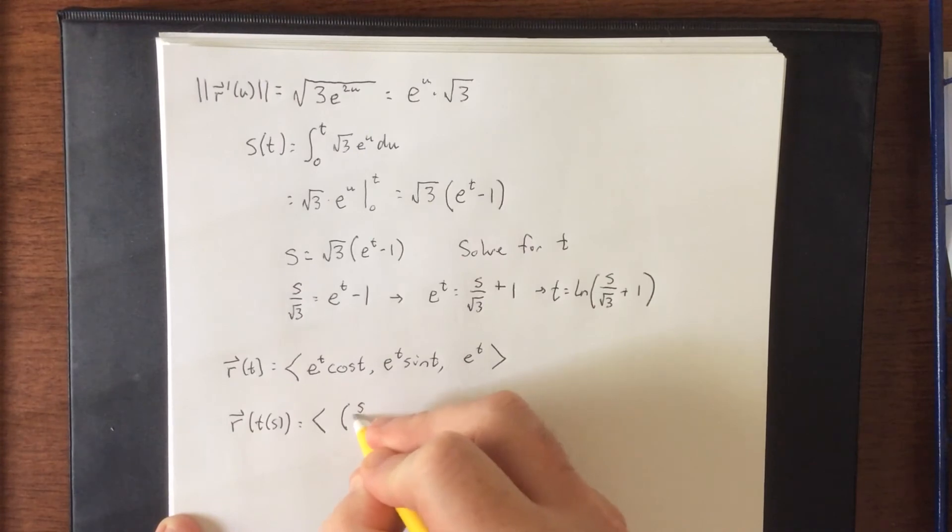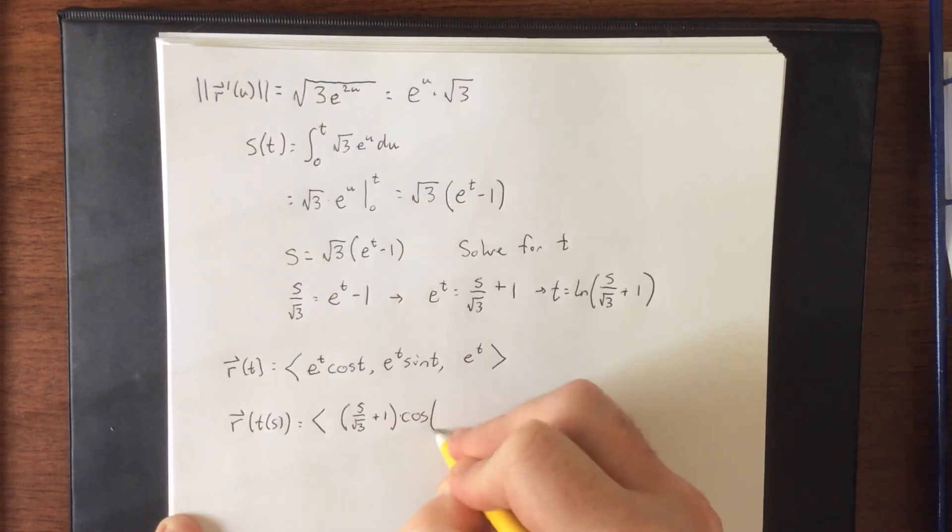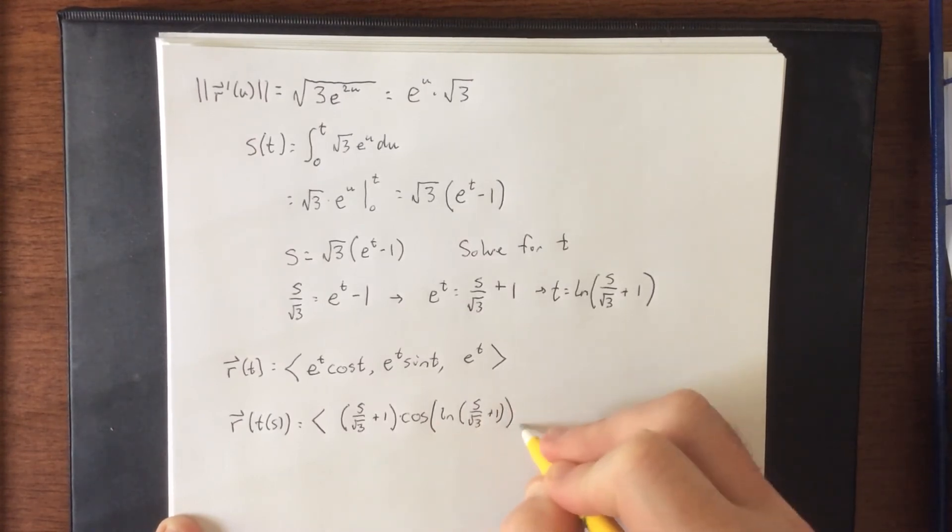So we have e to the t, which is s over the square root of three plus one times the cosine of t, and that will be the natural log of s over the square root of three plus one, comma.